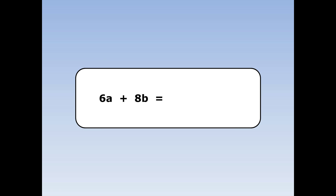The first thing I need to do is find the highest number that goes into 6 and 8. The highest number that goes into 6 and 8 is 2. Next I put my brackets, then I say 2 times something equals 6a. The answer is 3a — 2 times 3a is 6a.